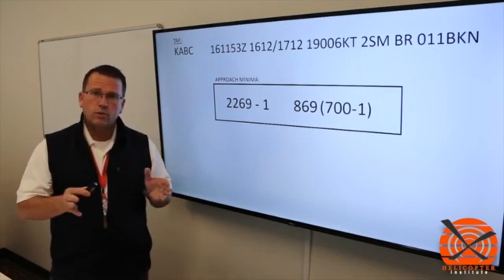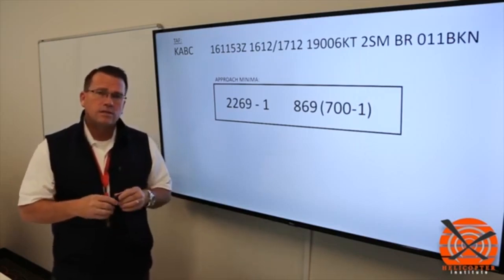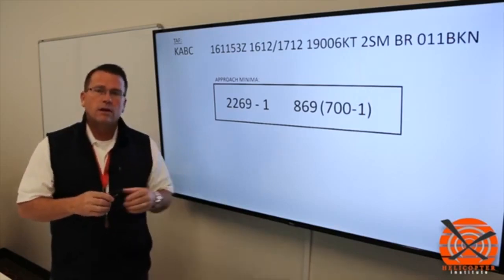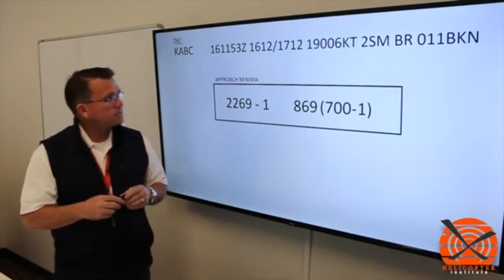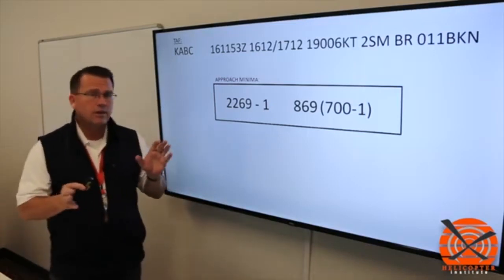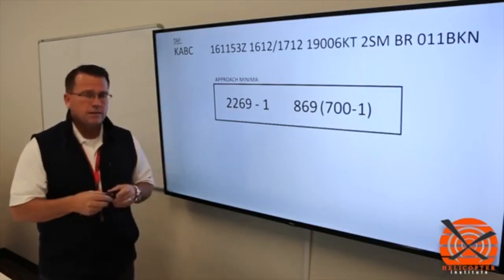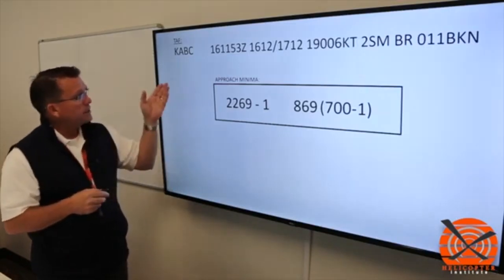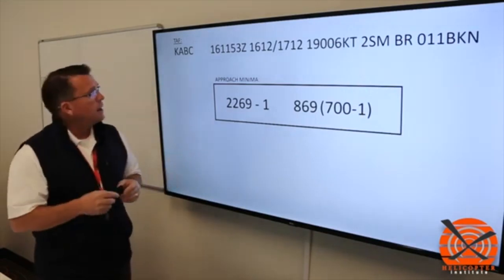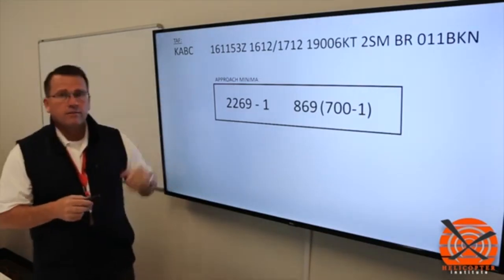And this is related to 91.167 and 91.169, primary airport versus alternate airport IFR requirements. So in this particular scenario, we've given a portion of a terminal aerodrome forecast, the TAF. So you see it's the KABC airport, it was established on the 16th day at 1153 Zulu.